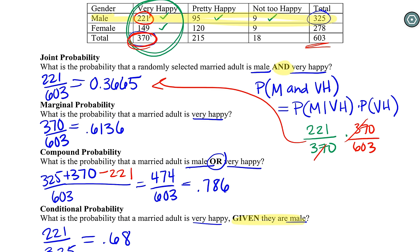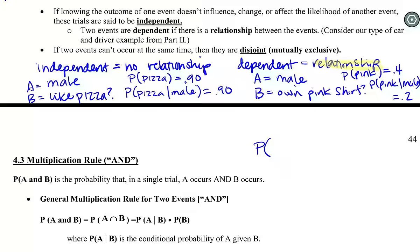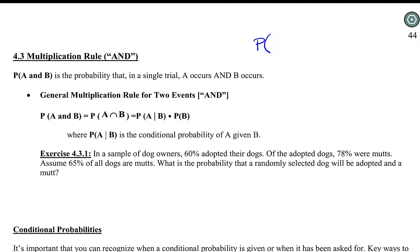That is how this AND probability works. It's almost easier to think of it in the other direction. We start with: what's the probability someone's very happy? Now that we know they're very happy — because it's on the other side of the line in our conditional — what's the probability they're male? If I multiply those together, I'm going to get back our AND probability. I've sort of tried to illustrate what this is.